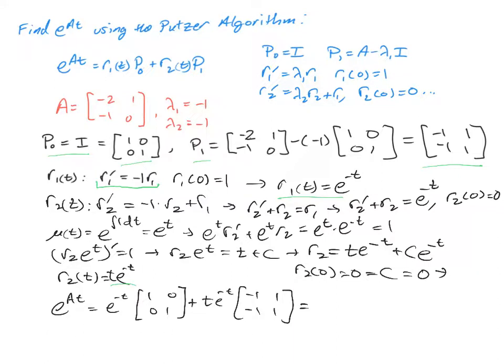And if we now combine this, we will notice that we're going to have a 1 minus T E to the negative T, and then we will have a T E to the negative T, and then we will have a negative T E to the negative T, and then we will have a 1 plus T E to the negative T.